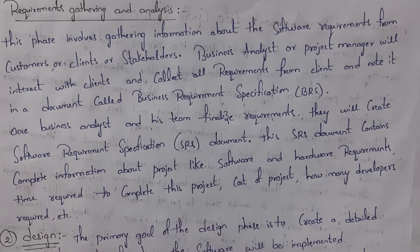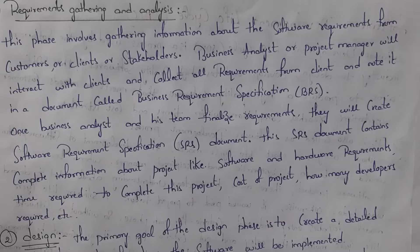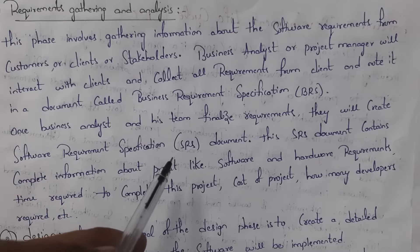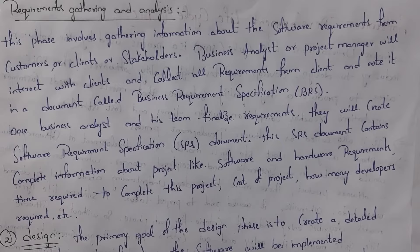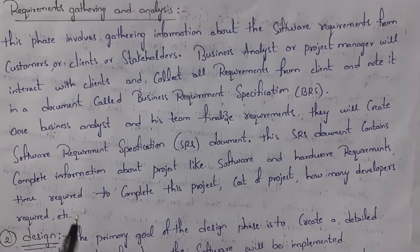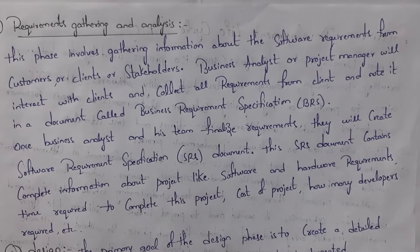When I tell my requirements, the business analyst notes them in a Business Requirement Specification (BRS) document. After finalizing the BRS document, they create another document called the Software Requirement Specification (SRS) document. The SRS document contains complete information about the project: what software and hardware is required, how much time it will take, how many developers are needed, the cost of the project, and so on.